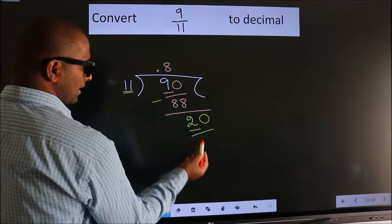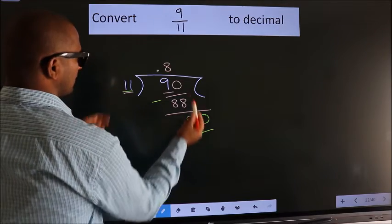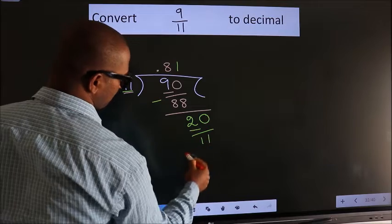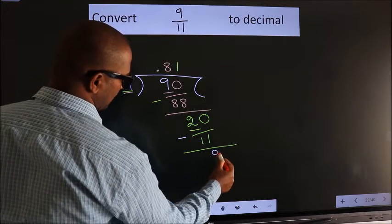So 20. A number close to 20 in 11 table is 11 once, which is 11. Now we subtract, we get 9.